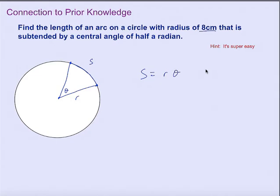In the example here, if the radius is 8 centimeters and the central angle is half a radian, you multiply 8 times one-half, and that arc length is 4 centimeters. But that formula S equals Rθ is going to be helpful for us in just a minute.